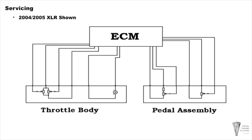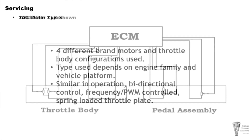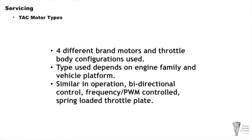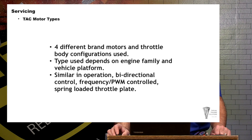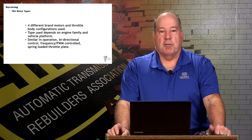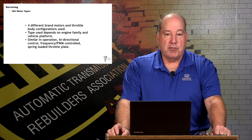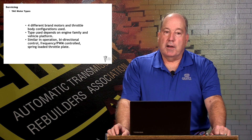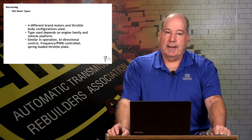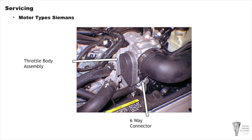Here is the XLR, which is the same as the Corvette — the pedal assembly is a direct input to the engine control module, which then controls the throttle body. There are four different brands of motor assemblies used by General Motors: Siemens, Pierberg, Hitachi, and Delphi. They look a little different, but are fairly similar in operation — bidirectional control, pulse width modulated or frequency modulated, with a spring-loaded throttle plate. Do not get your finger in the throttle plate; when you turn the key on, it's going to close the plate.